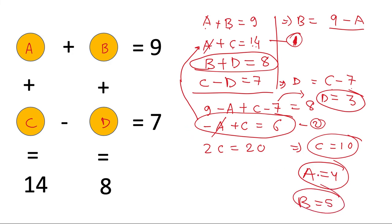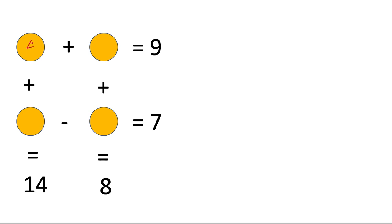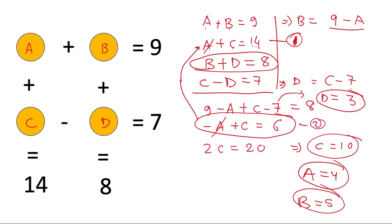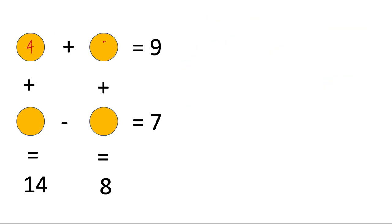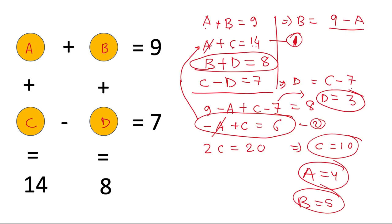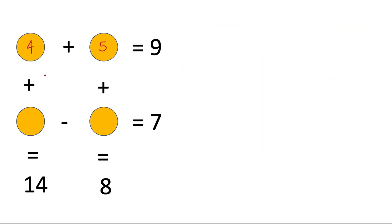So the final solution is 4, 5, 10, 3. Let's write it here: a is 4, b is 5, c is 10, and d is 3.